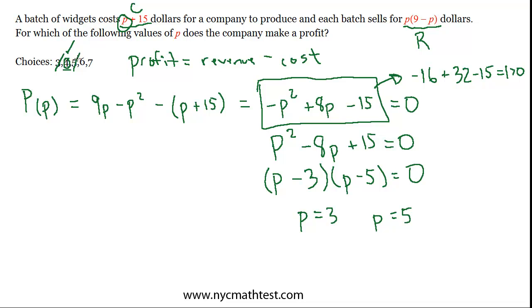4 is the best choice, and if you want to satisfy yourself, you can plug in 6 and 7 as well and make sure that they give you negative answers.